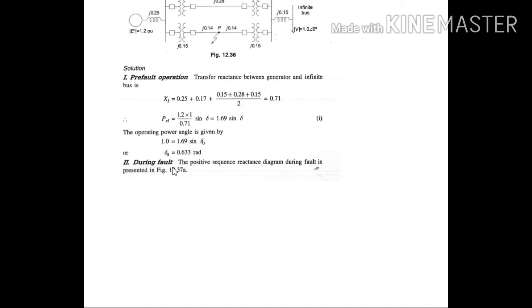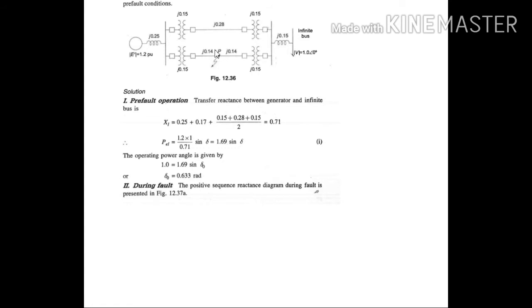That's all for the first condition. Then for during fault, now be careful. This fault is occurring at the middle of the transmission line. Therefore, there will be certain power transmission during fault also. This is not the same as the previous case where the fault was occurring near to the load, not at the middle of the transmission line.